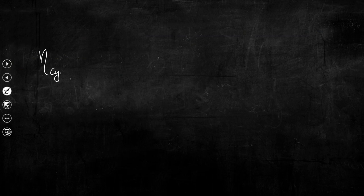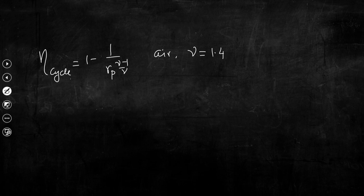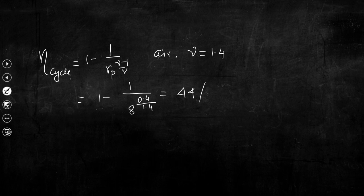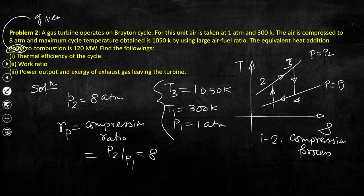The cycle efficiency is η_cycle = 1 − 1/(R_p^((γ−1)/γ)). Taking γ = 1.4 and plugging in: 1 − 1/(8^(0.4/1.4)) = 0.44, i.e., 44%. This is the thermal efficiency — the solution to the first part of this problem.